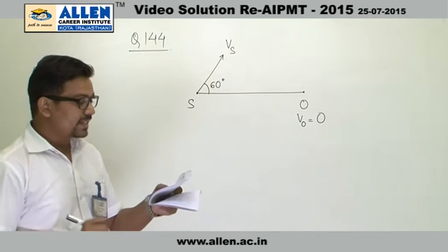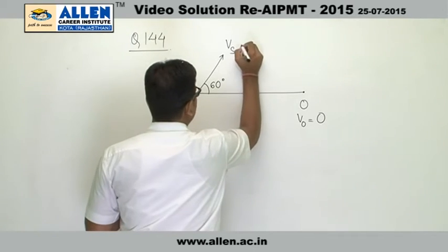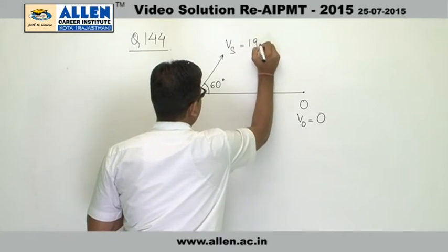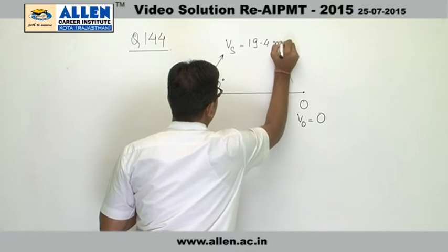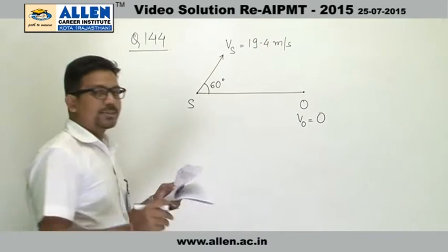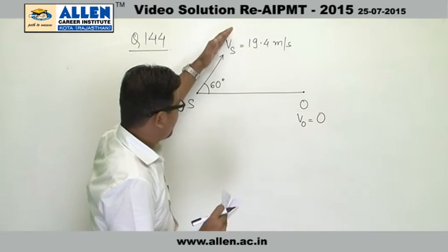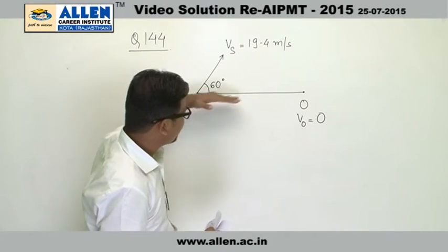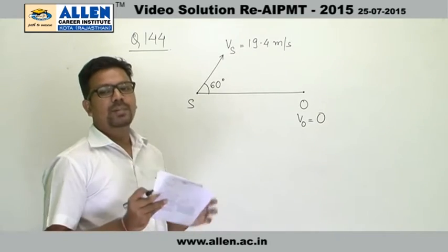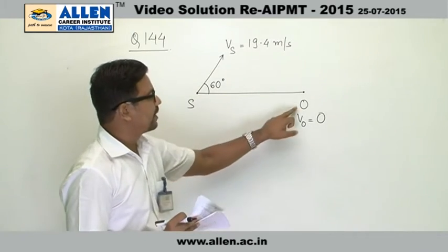Now the speed vs in the question is given to be 19.4 meters per second. It has been asked when the source moves at an angle of 60 degrees with the line joining the source and the observer, what will be the apparent frequency observed by an observer.